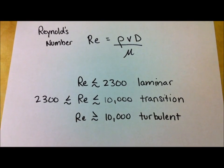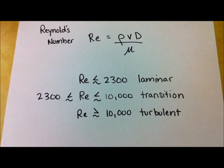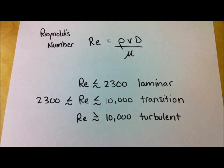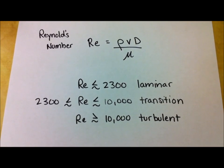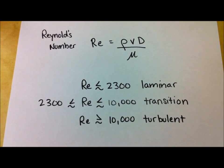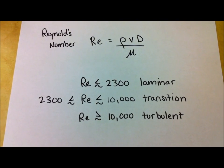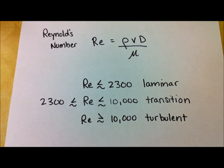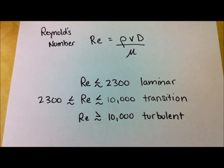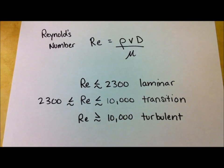Now in order to determine whether something is going to be laminar or turbulent, we can use a tool called the Reynolds number. The Reynolds number, noted by RE, is a function of the density of the liquid times the velocity of the liquid times the diameter of the pipe, divided by the dynamic viscosity. When we plug all those numbers in, if the value is below roughly 2300, we usually say it's laminar flow.